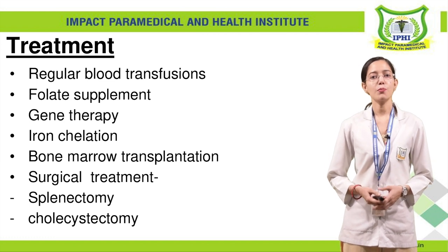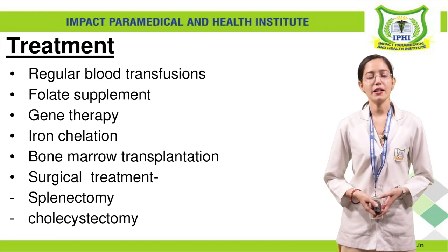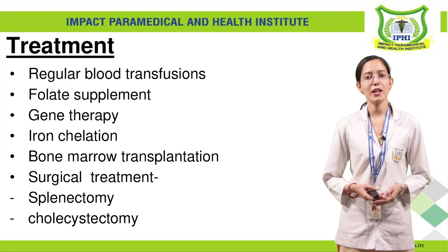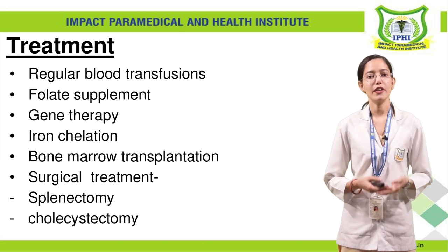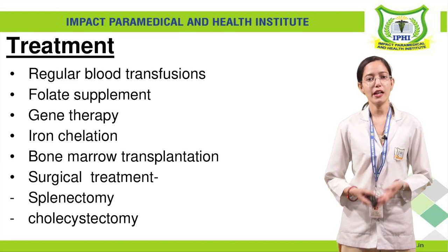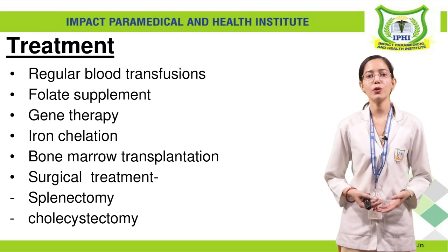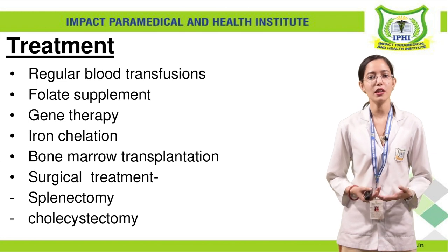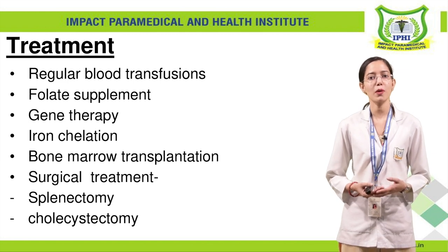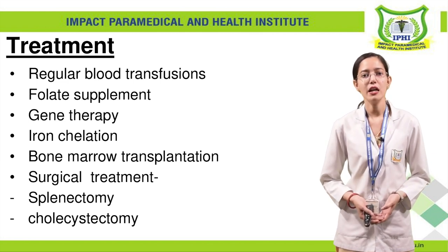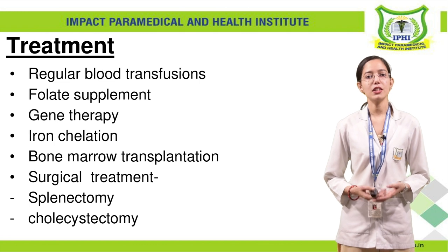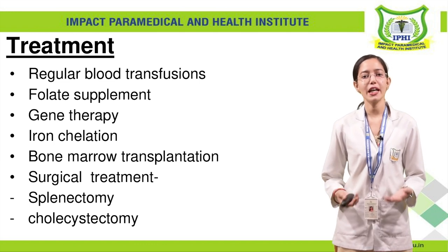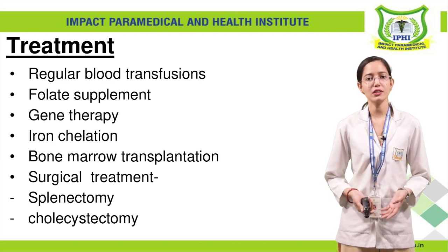We can do bone marrow transplantation. There are two types of bone marrow: red bone marrow and yellow bone marrow. Red bone marrow is where red blood cells are formed, so bone marrow transplantation can address this condition. Besides this, surgical treatment such as removal of the spleen or gallbladder can also be performed.